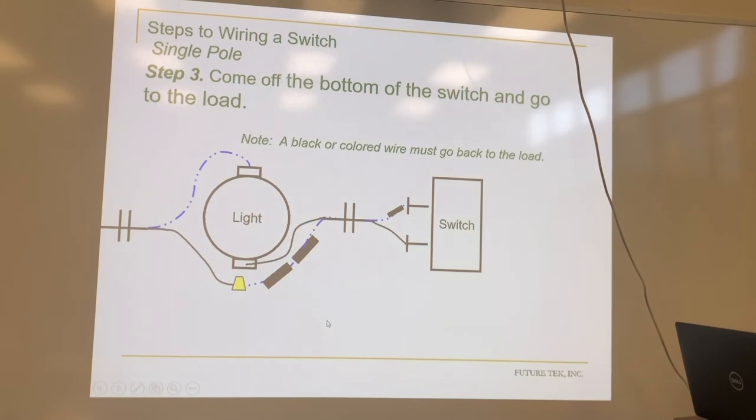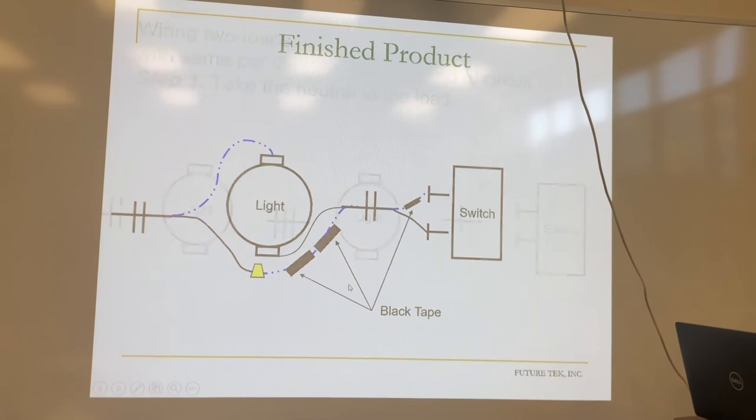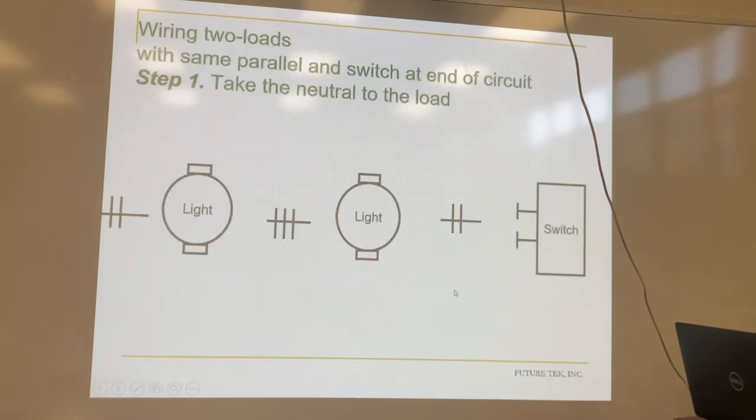Okay. Now this one can be a little bit tricky. So we're feeding light, then light, then switch. We're still a switch loop, but we've got two lights coming in. You're going to have to run a 12-3 between the two lights. Okay, and here's why.